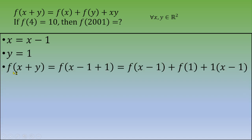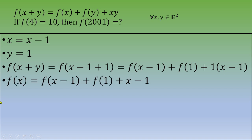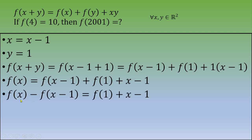Substituting x → x−1 and y = 1, we get f(x) = f(x−1) + f(1) + 1·(x−1). Rearranging, this gives f(x) − f(x−1) = f(1) + x − 1. Now we need to find the value of f(1), which we will obtain using the given condition f(4) = 10.